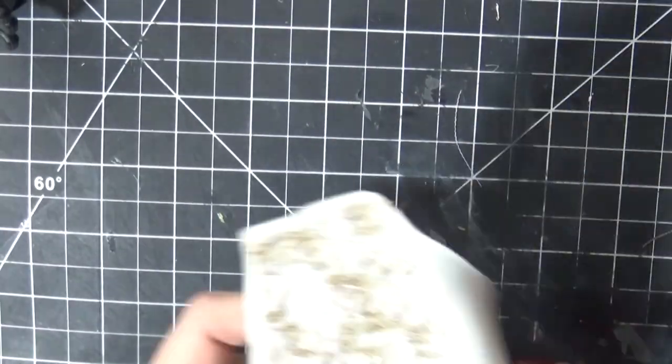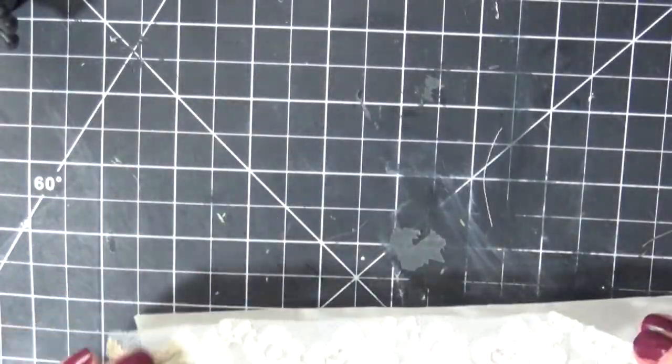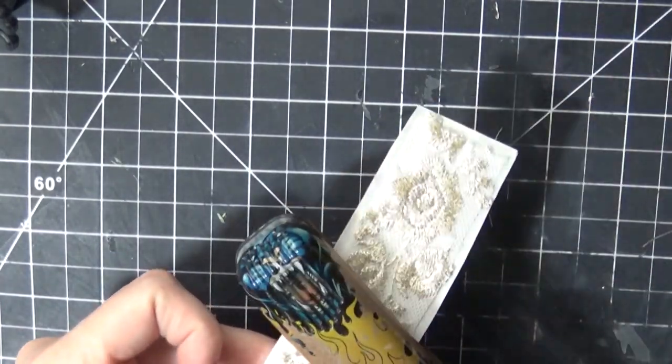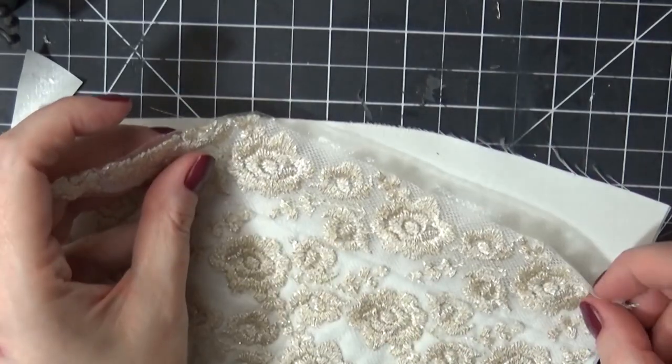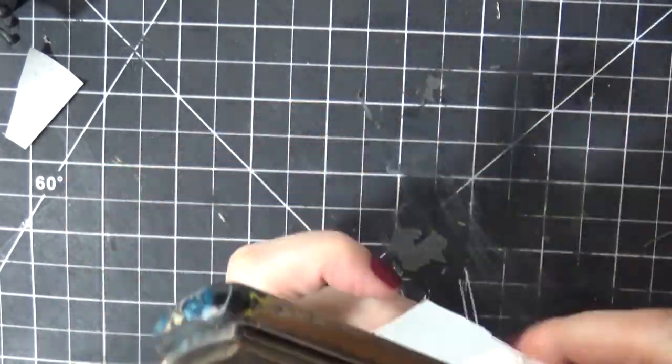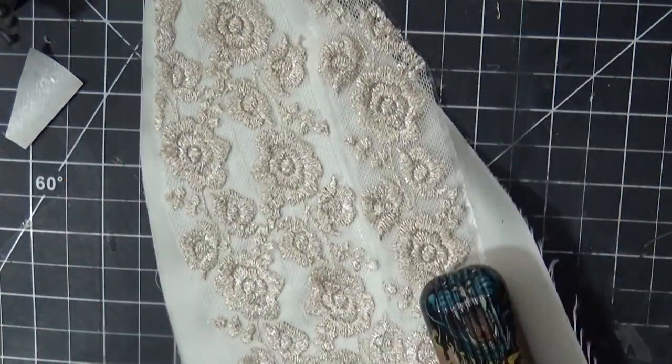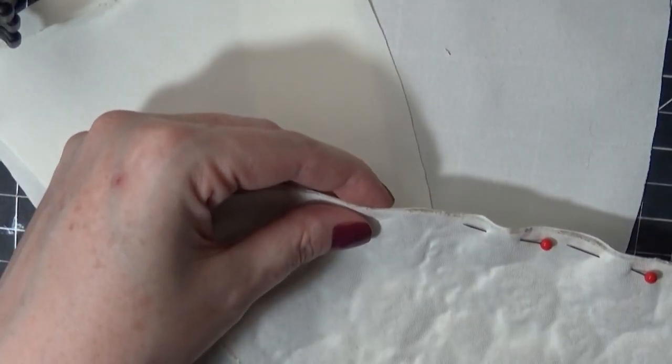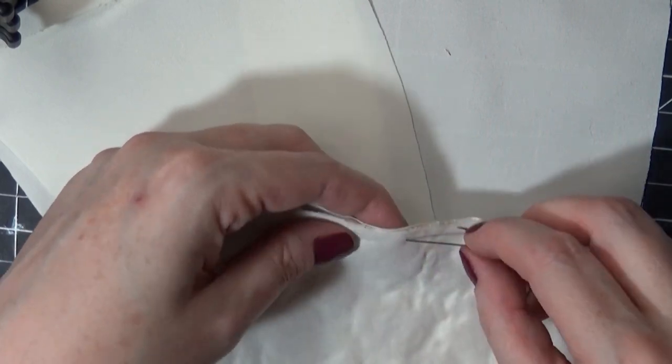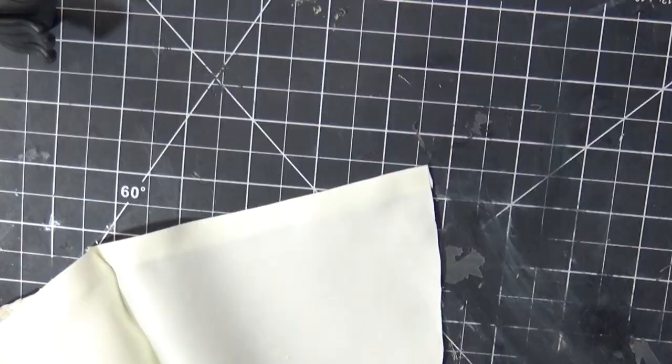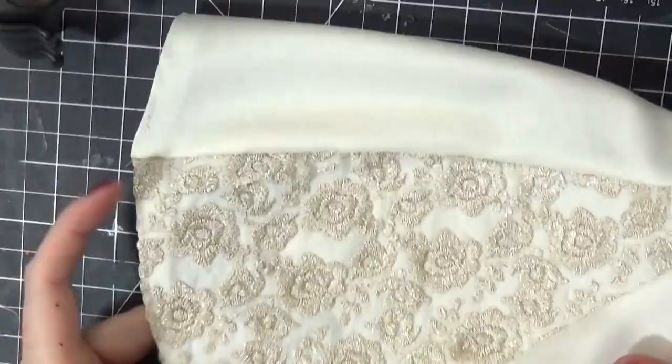For the skirt, I searched and searched and couldn't find the fabric that I wanted that had a quilted floral look. It was very difficult to find that kind of fabric in the scale that I wanted. So I did find this ribbon that had an embroidered look, and I ended up using some iron-on hemming fabric or tape.